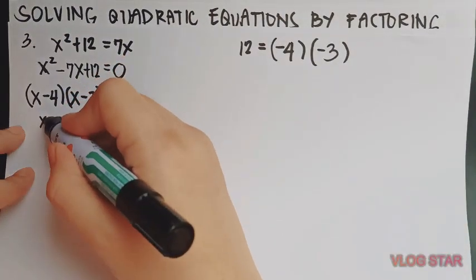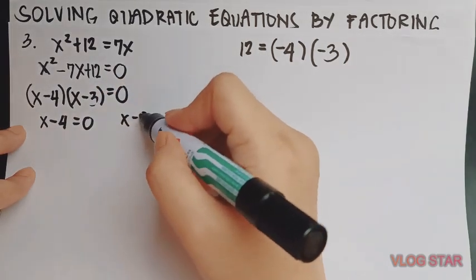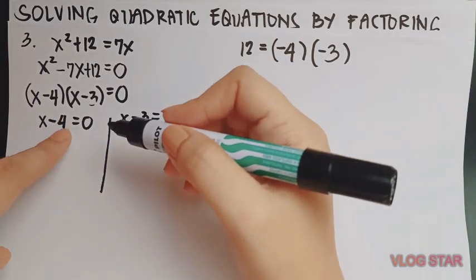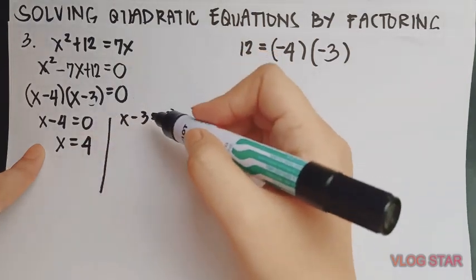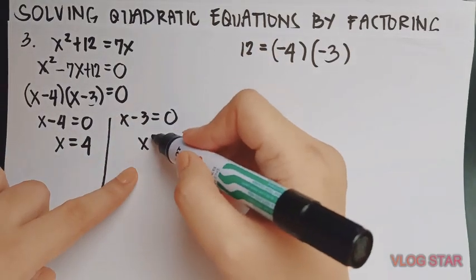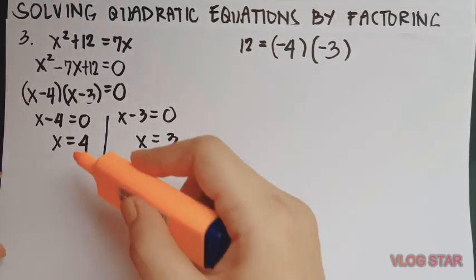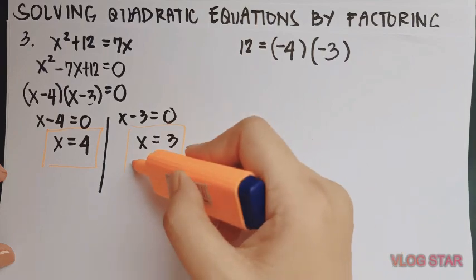Now, let's write this as x minus 4 equals 0 and x minus 3 equals 0. Solve. So this will now become x equals 4 and this is x equals 3. And these are now the solutions to the equation.